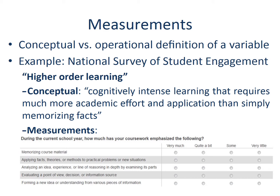The researchers wanted to collect data on institutional practice on higher-order learning and employed a number of measures to capture it. The measurements ask: during the current school year, how much has students' coursework emphasized memorizing course material, applying facts, theories, or methods to practical problems or new situations, and so on. The measurements consist of a four-level scale ranging from 'very little' to 'very much.' This means each measurement will be turned into a variable with four values before the researchers start doing the data analysis.